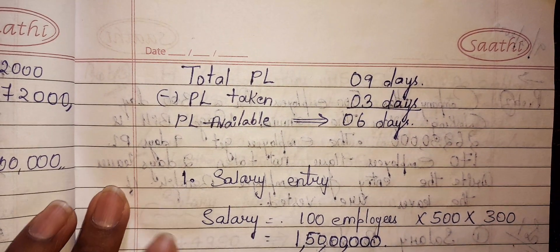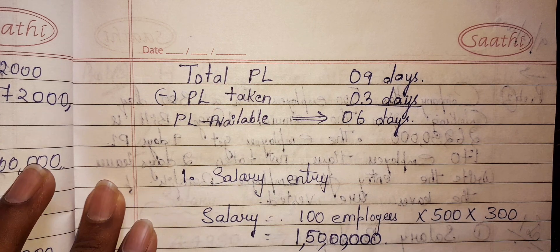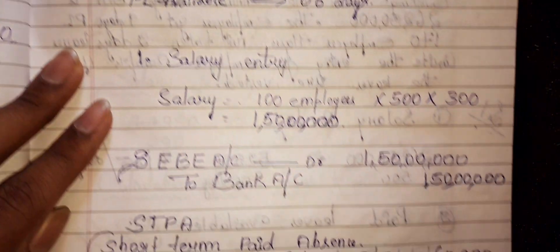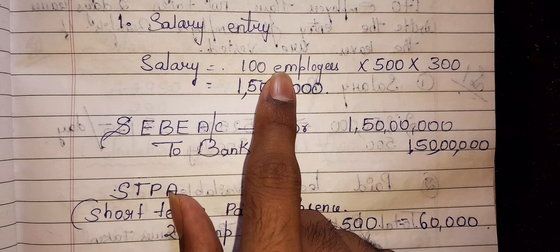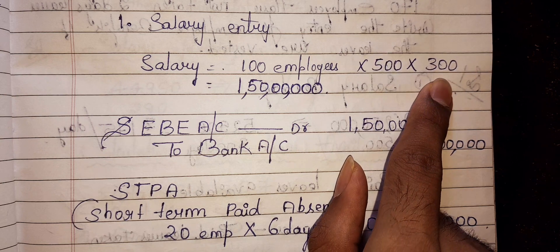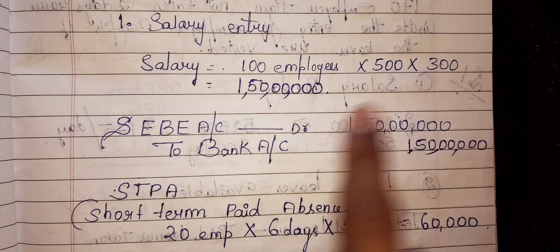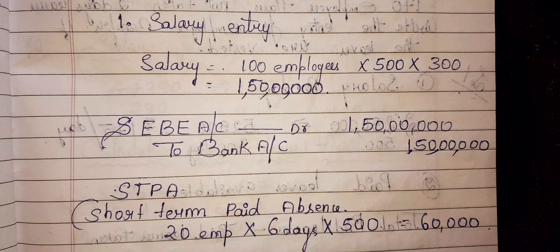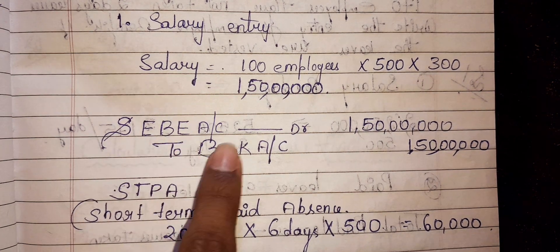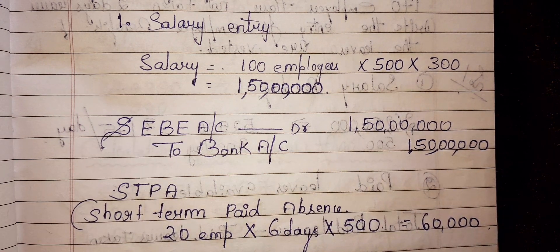Now we need to pass one entry for salary and one entry for paid leave. For salary: total 100 employees, each getting ₹500 per day, for 300 working days. So 100 × 500 × 300 = ₹1,50,00,000 (one crore fifty lakhs). The journal entry will be: Employee Benefit Expenses Account debit ₹1,50,00,000 to Bank Account ₹1,50,00,000.